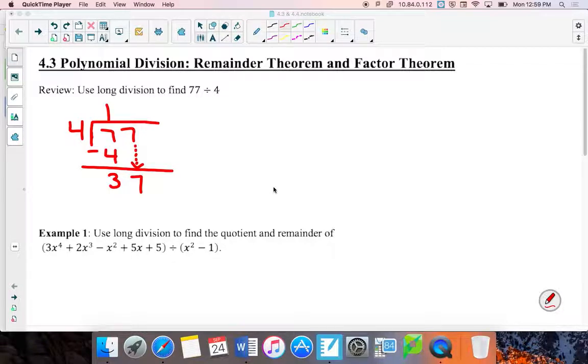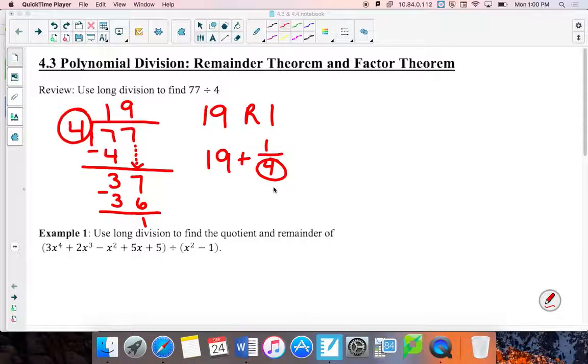So 7 minus 4 gives me a 3, and then I'm going to bring down the next number. Now, 4 can't go into 3, so we're going to expand it to the next two digits. 4 can go into 37 nine times. 9 times 4 is 36. Subtract those from each other. I have 1 left over. Nothing else to bring down, so 4 can't go into 1. So I know that 77 divided by 4 is 19 with a remainder of 1.